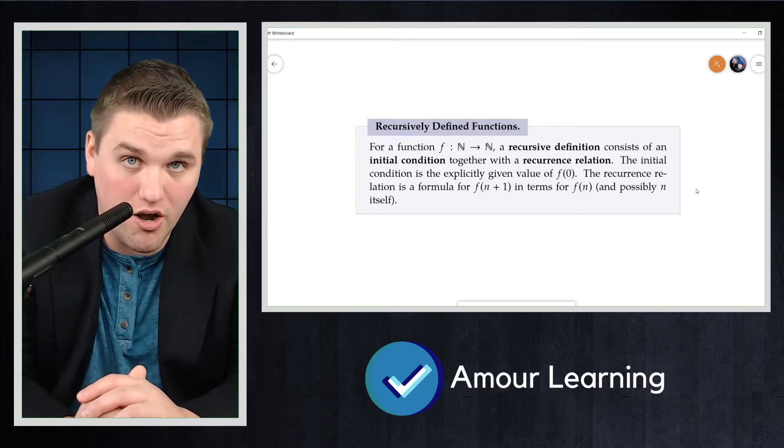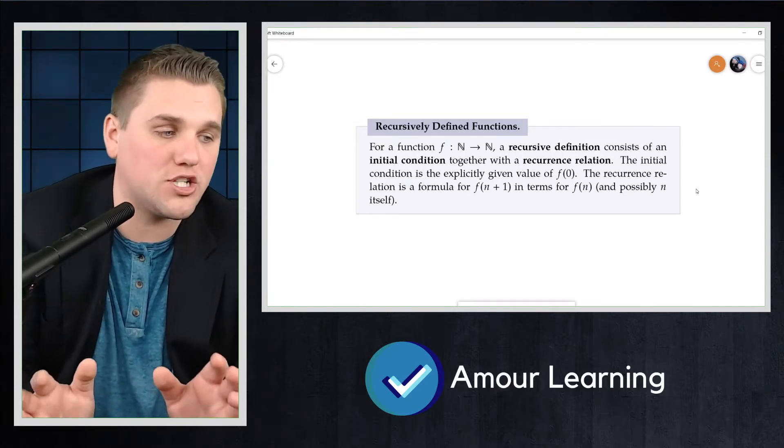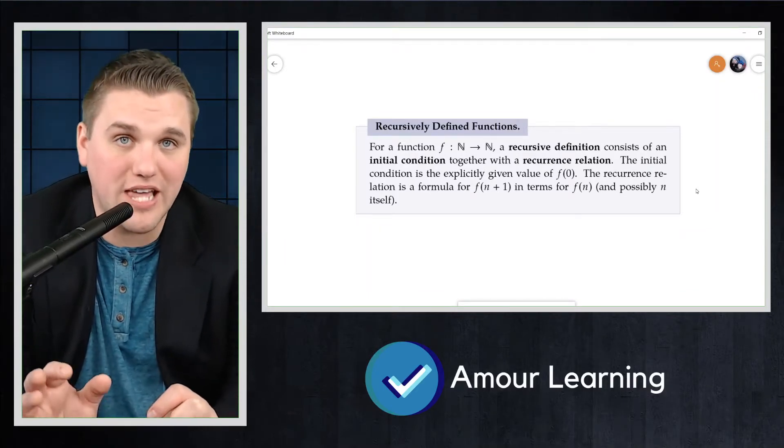The initial condition is the explicitly given value of f(0). The recurrence relation is the formula for f(n+1) in terms of f(n) and possibly n itself.